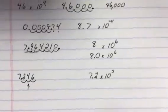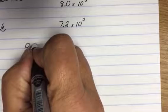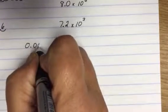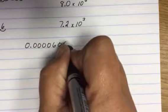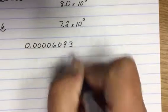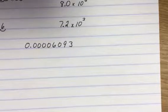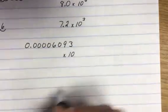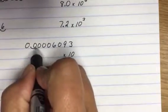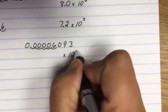Let's try one more. 0.00006093. All right. Now I'm going to have times 10. So let's go. One, two, three, four, five. I know it's a fifth.